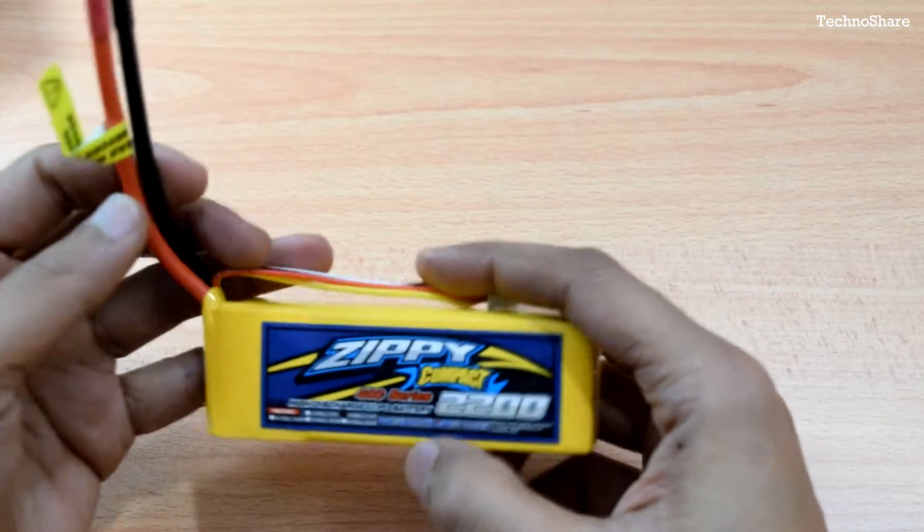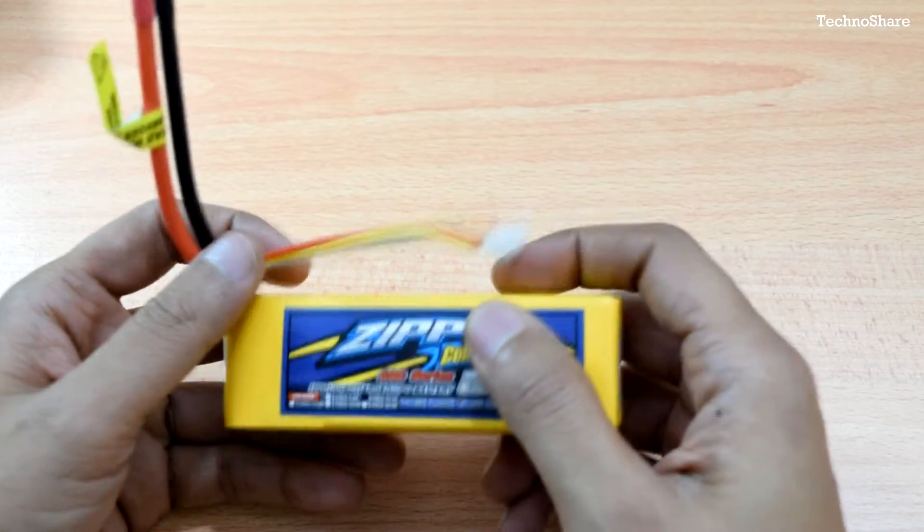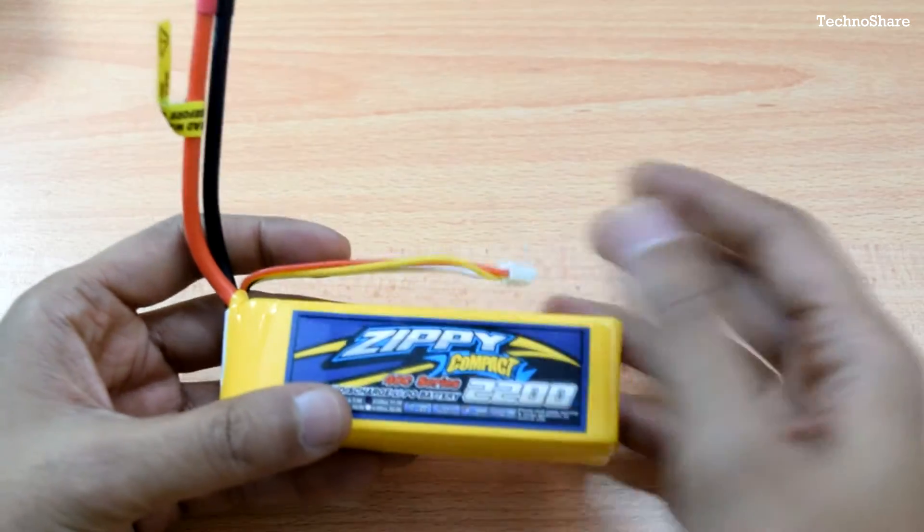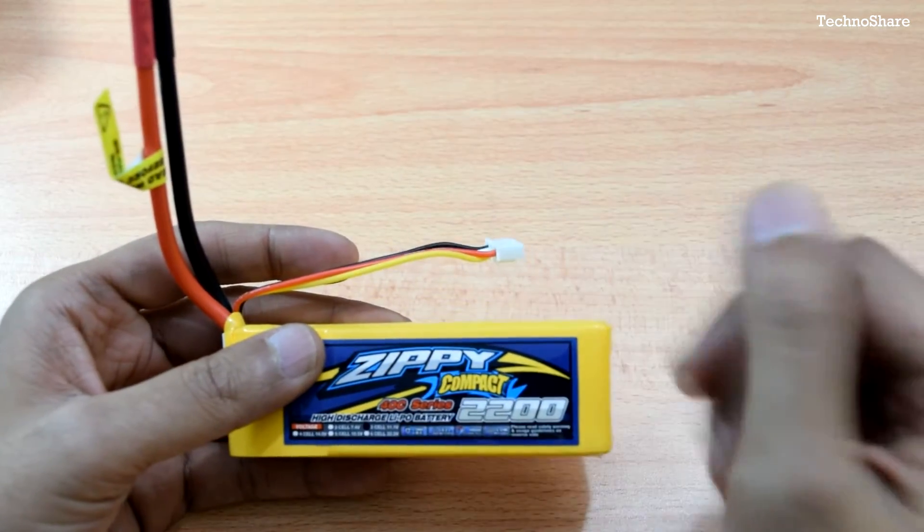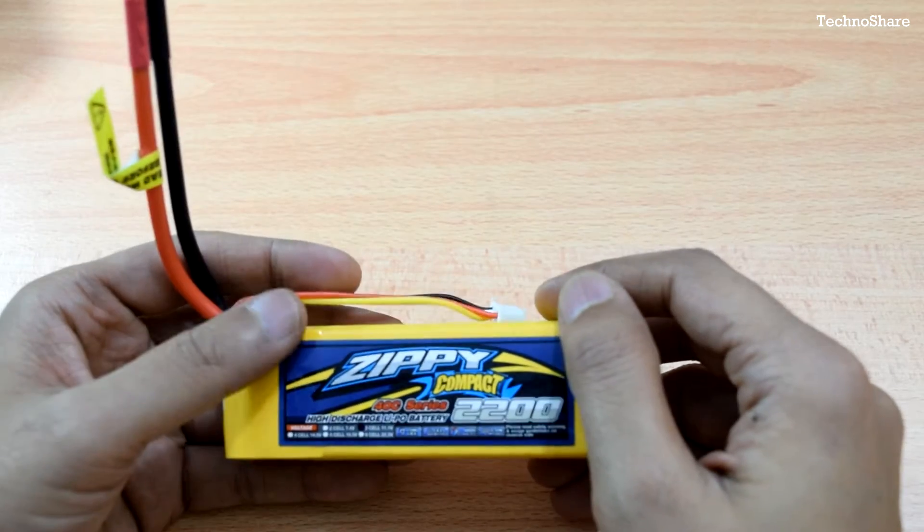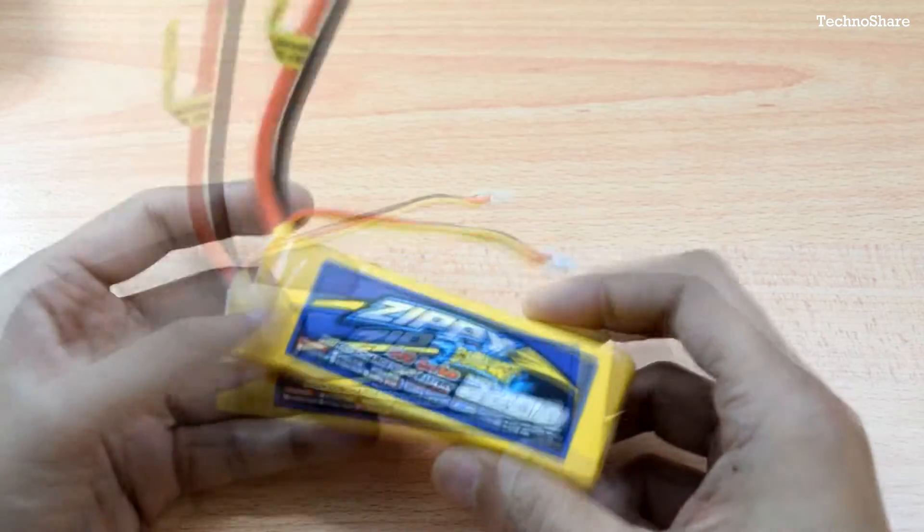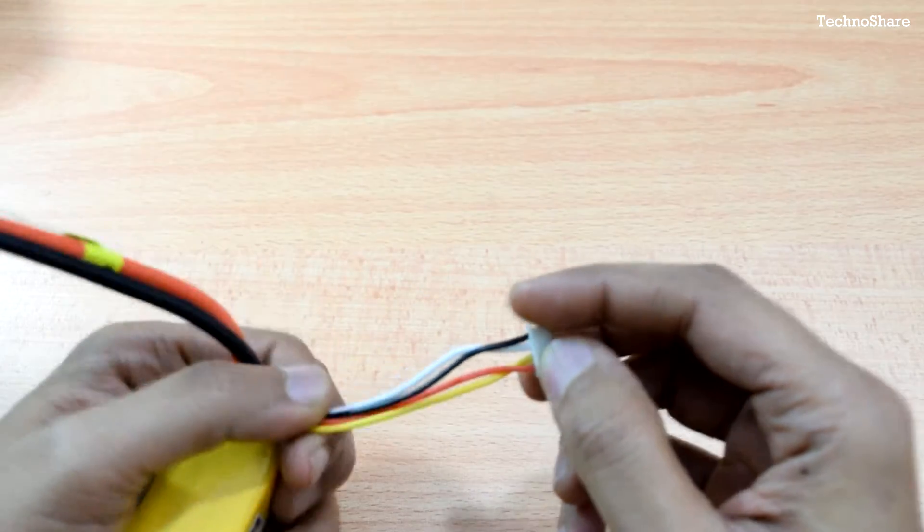So going by the numbers we can draw a continuous current of up to 2.2 times 40 which is about 88 amps. Which is pretty high. It also has these balance charging leads.